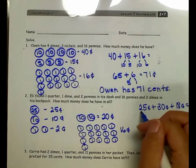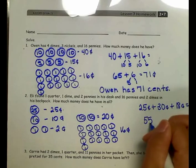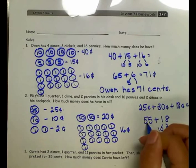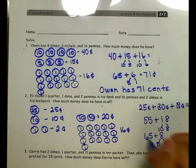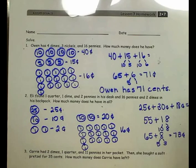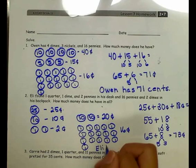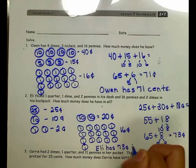25 cents plus 30 cents gives me 55, plus 18. I'll decompose 18 into 10 and 8. 55 plus 10 is 65, plus 8 — 65 plus 5 is 70, plus 3 is 73 cents. Eli has 73 cents in all.